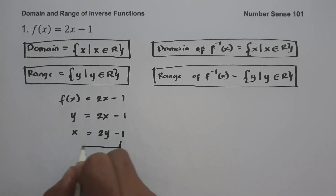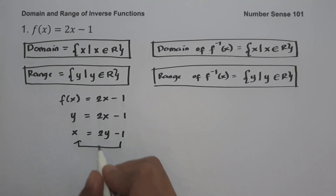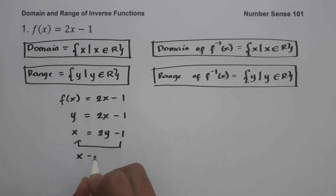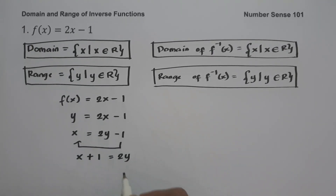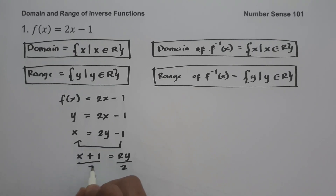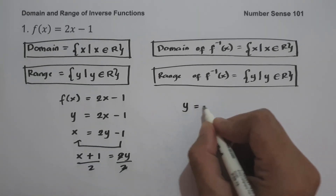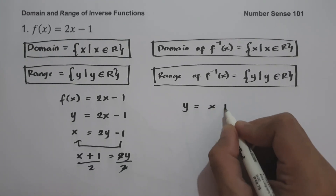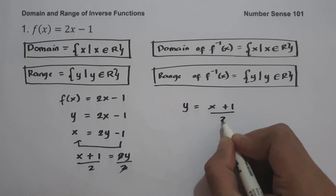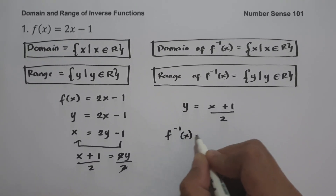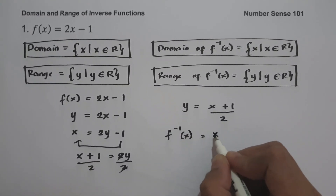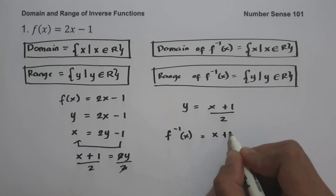Moving negative 1 to the side of x gives us x plus 1 equals 2y. Dividing both sides by 2, we get y equals x plus 1 all over 2. So this will be the inverse function of 2x minus 1.